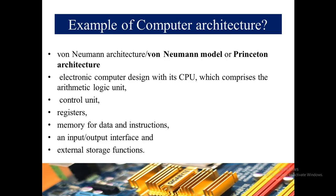The Von Neumann architecture, also known as Princeton architecture, is an electronic computer design whose CPU comprises an arithmetic logic unit, control unit, registers, memory for data and instructions, an input/output interface, and external storage functions.